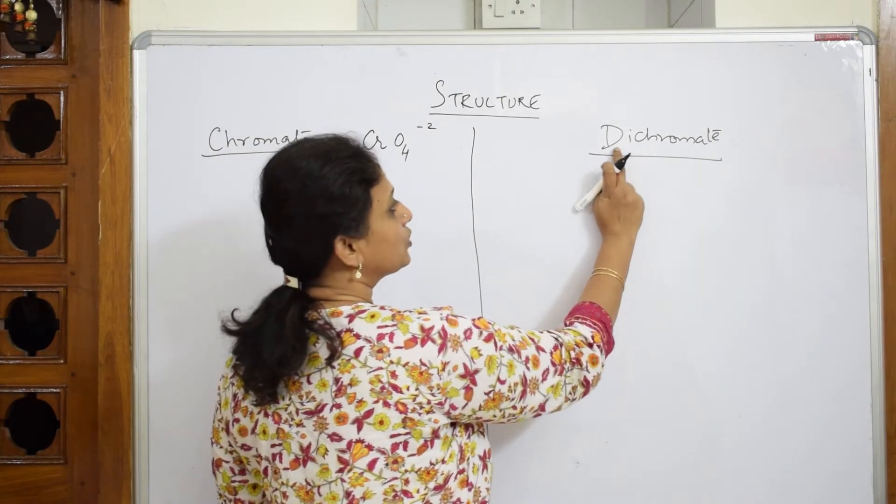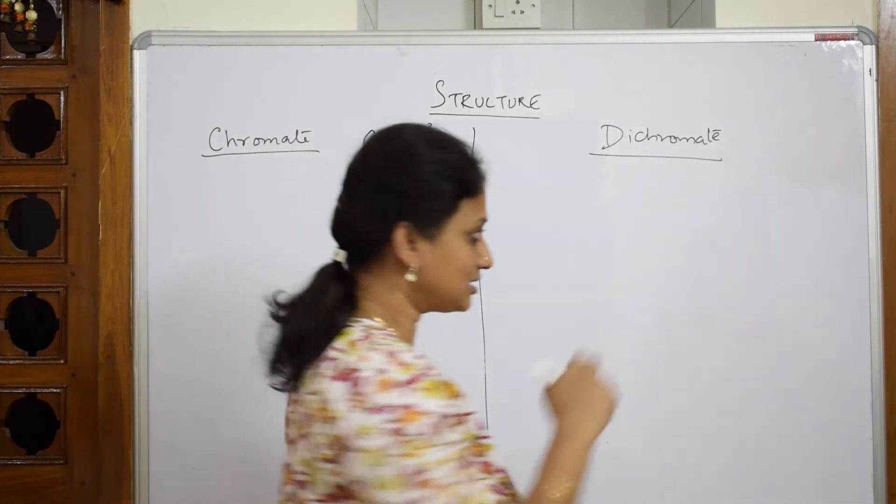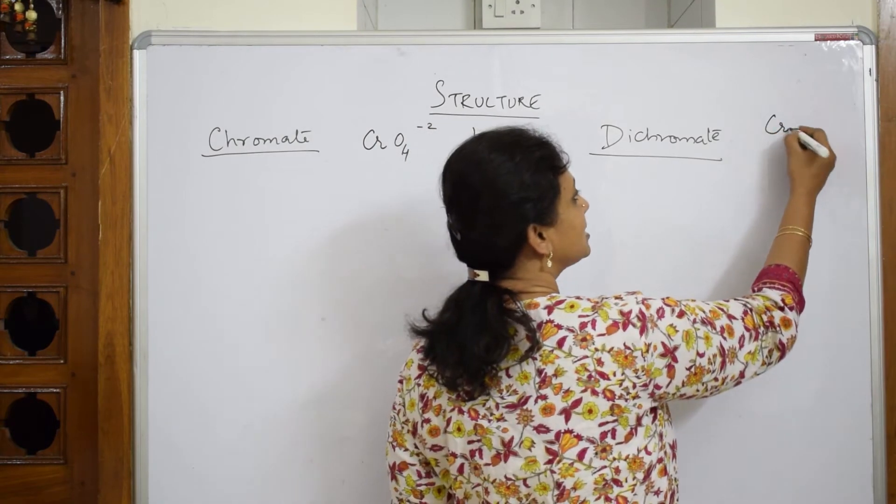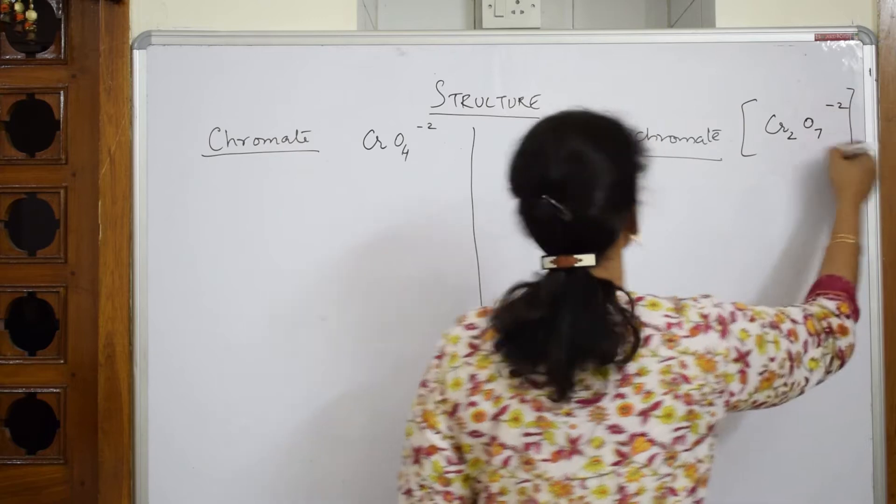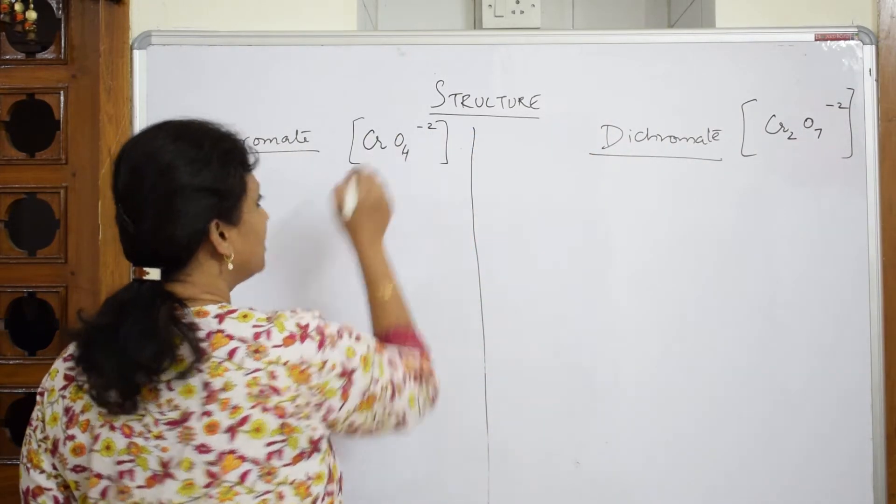Here, when I have to speak about dichromate, this is chromate. Now, two chromates, di, two chromates linked together. It is Cr2O7²⁻. So this is your charge and this is your whole formula. Let us write the structure.